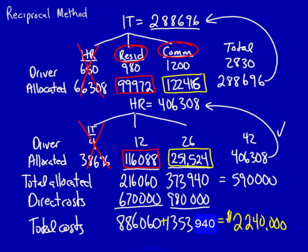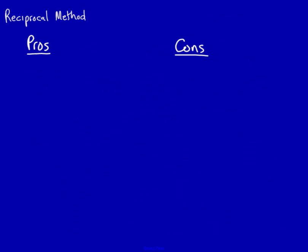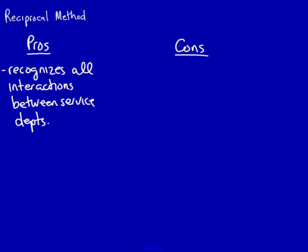So what are the pros and cons of the reciprocal method? The main pro is that it takes into account all the interconnections between service departments. This is an excellent positive.